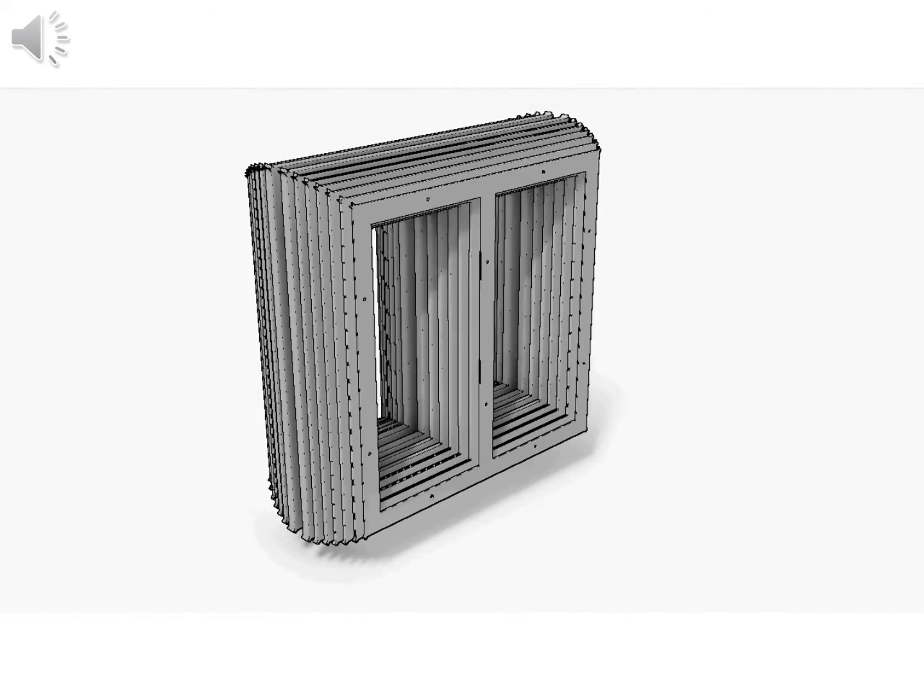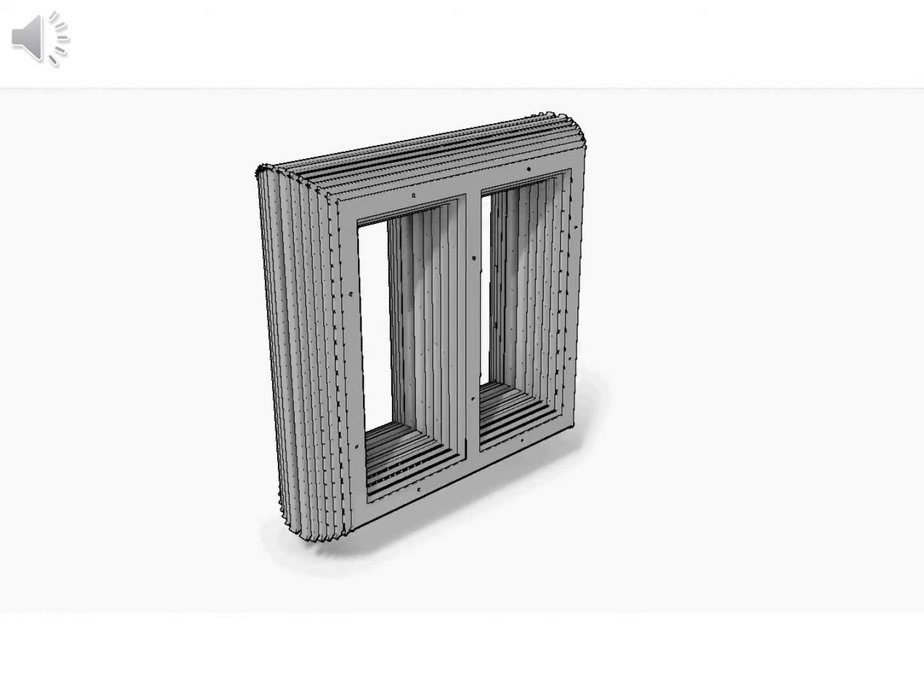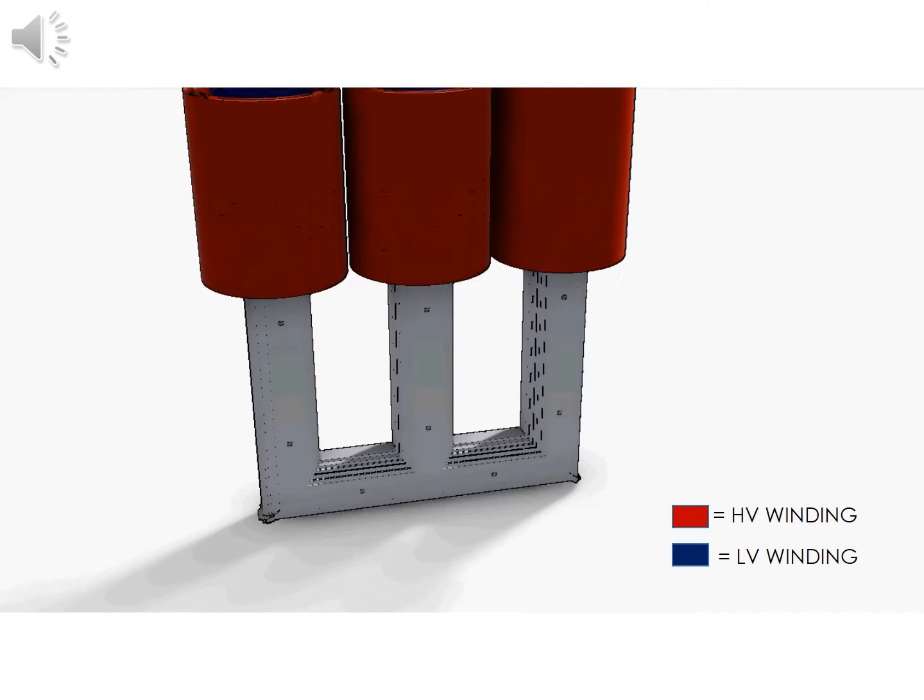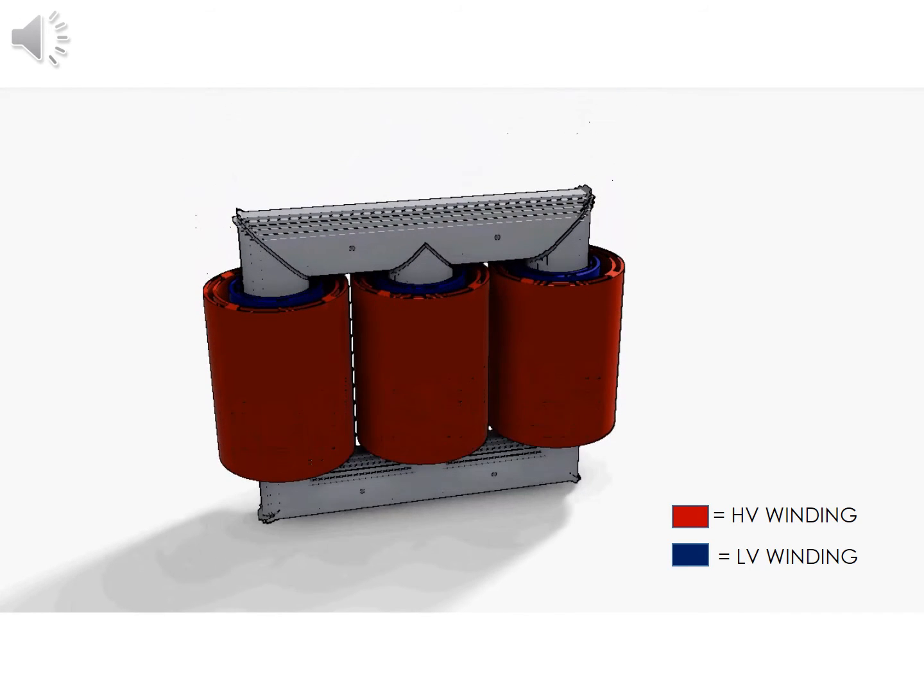Such steel laminations are stacked together, as shown, to form three-phase limbs. The purpose of thin laminations is to reduce energy loss due to eddy current formation.